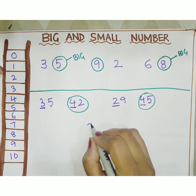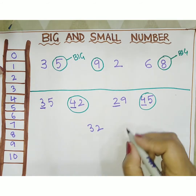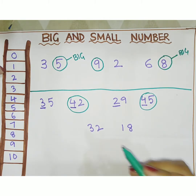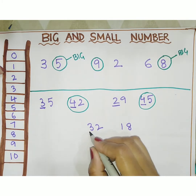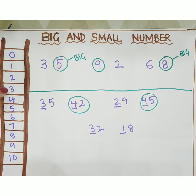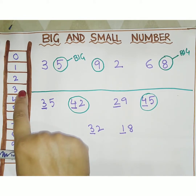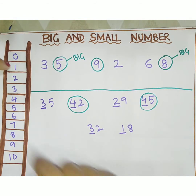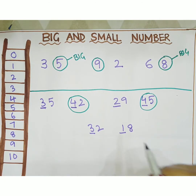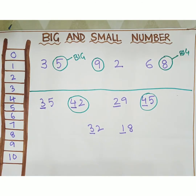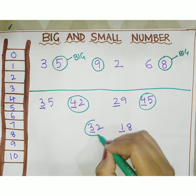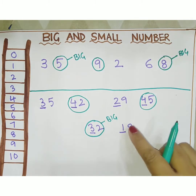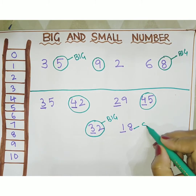The next numbers are 32 and 18. In the same way, we have to compare the first digit. This is 3 and this is 1. Which number comes first? 1 comes first. It means 18 is the small number and 32 is the big number.